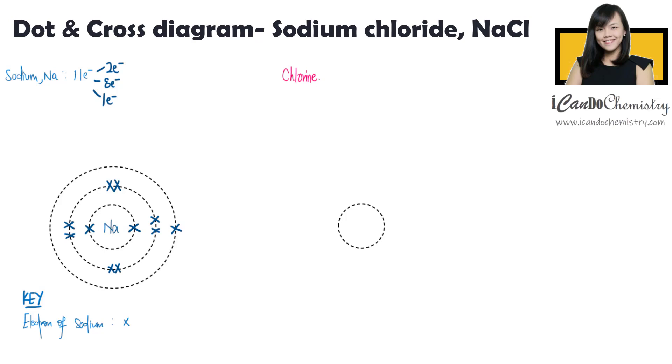Now the non-metal in this compound is chlorine. Chlorine has 17 electrons. The first shell holds 2. The second shell holds 8. It has 7 in the third shell. Chlorine has only 7 electrons in its outermost shell. It needs 1 more electron to achieve the octet configuration.